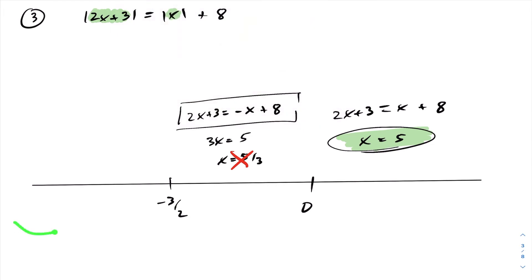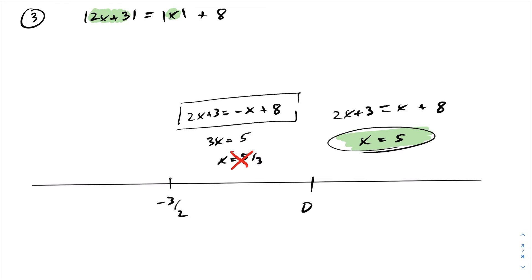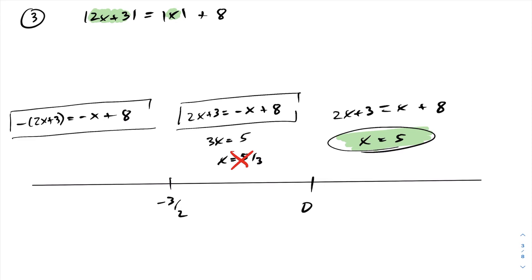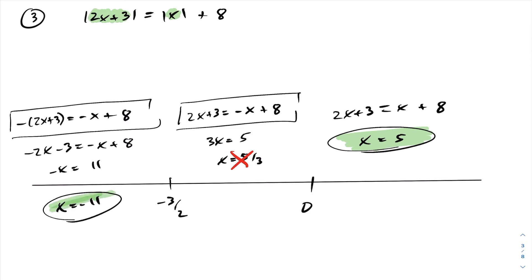Moving to the left-hand side, picking a number within this interval, any number we choose results in both inputs being negative. Therefore, we have to put a minus sign on both expressions. Solving this equation, we get negative 2x minus 3 equals negative x plus 8. Solving this, we get negative x equals 11, so x equals negative 11. And x equals negative 11 is within this interval. Therefore, the answer to this equation is two values: negative 11 and 5.